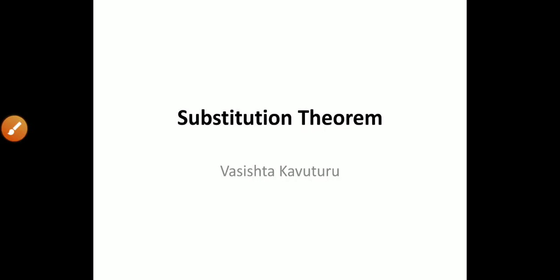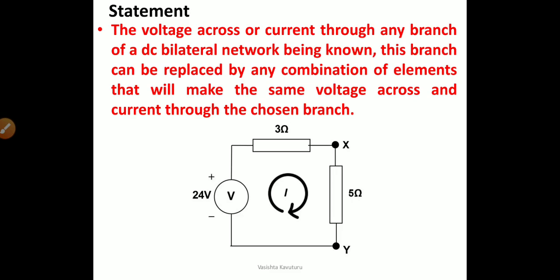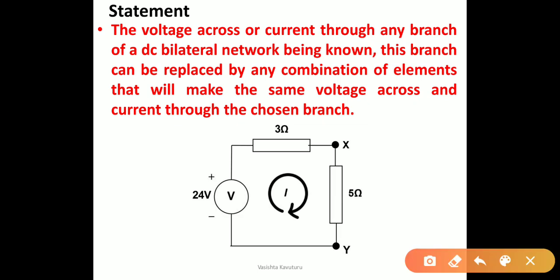Hi everyone, welcome to my channel. In this video we will see about the Substitution Theorem. According to this theorem, the statement is: the voltage across or current through any branch of a DC bilateral network being known, this branch can be replaced by any combination of elements that will make the same voltage across and the current through the chosen branch.